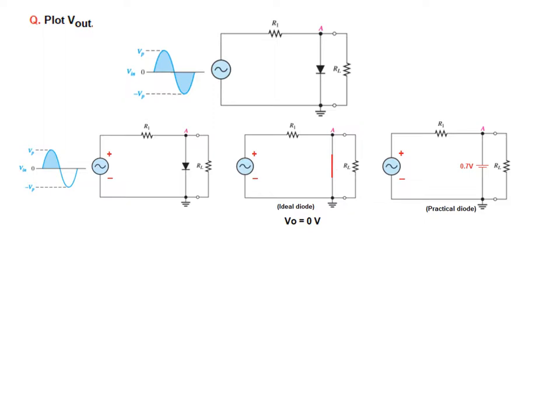Now in this case, what will be the output? The 0.7 volt is constant, it is not changing and this voltage cannot exceed here. It will be fixed because the moment it exceeds 0.7 volt, this diode will start conducting and will keep this voltage fixed. Therefore the Vout is 0.7 volt.